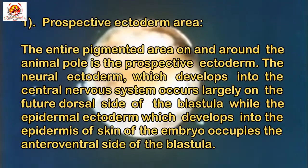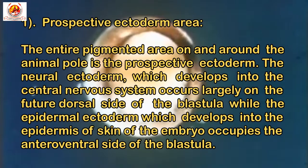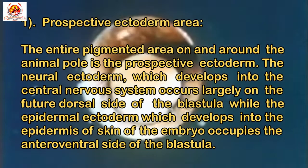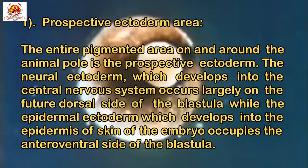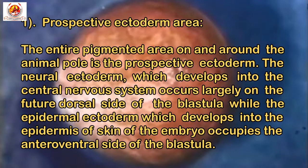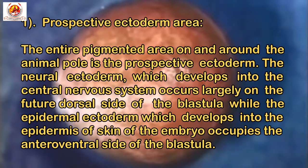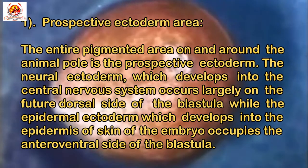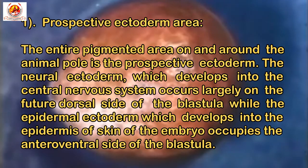Number one is the prospective ectoderm area. The entire pigmented area on and around the animal pole is the prospective ectoderm. The neural ectoderm, which develops into the central nervous system, occurs largely on the future dorsal side of the blastula, while the epidermal ectoderm, which develops into the epidermis of the skin of the embryo, occupies the ventral side of the blastula.